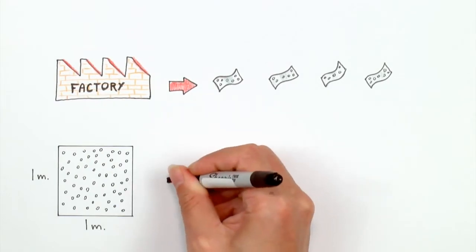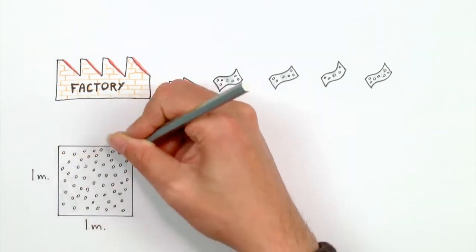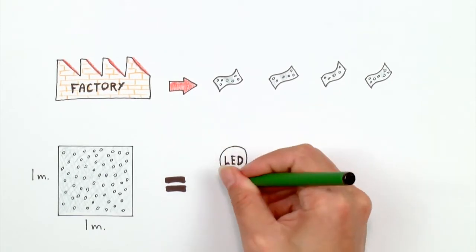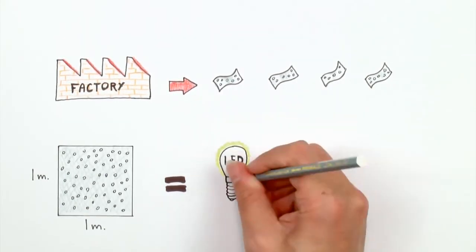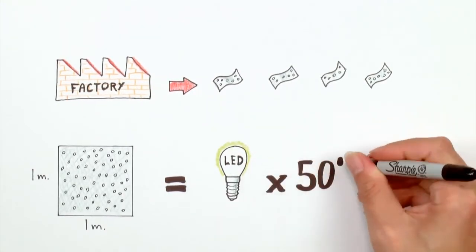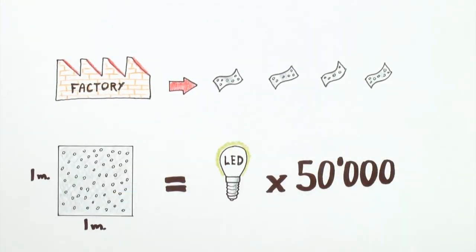Theoretically, the maximum yield of the device is impressive. For a membrane that is one square meter and with only 30% of its surface covered with nanopores, we could reach 1 megawatt, enough to run 50,000 standard energy-saving light bulbs.